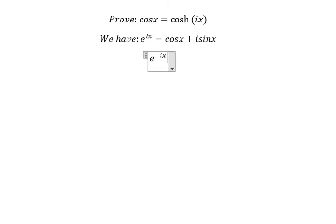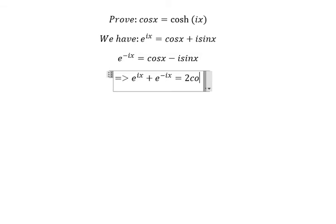Equal to cosx minus i sinx. Now we sum this one and this one together and you will get 2 cosx. Later, we divide both sides by 2.